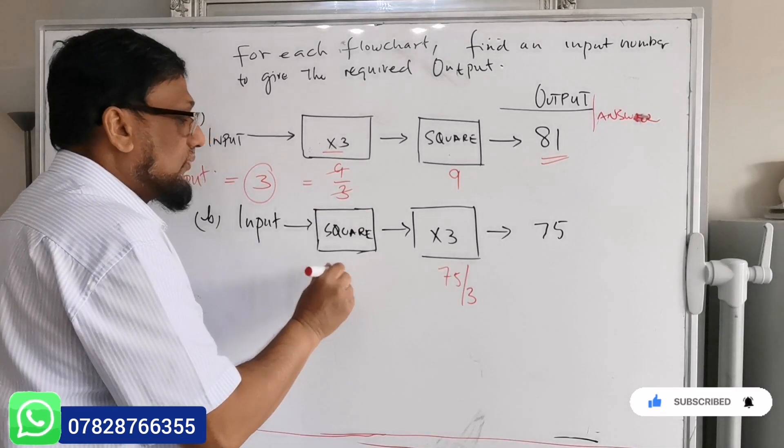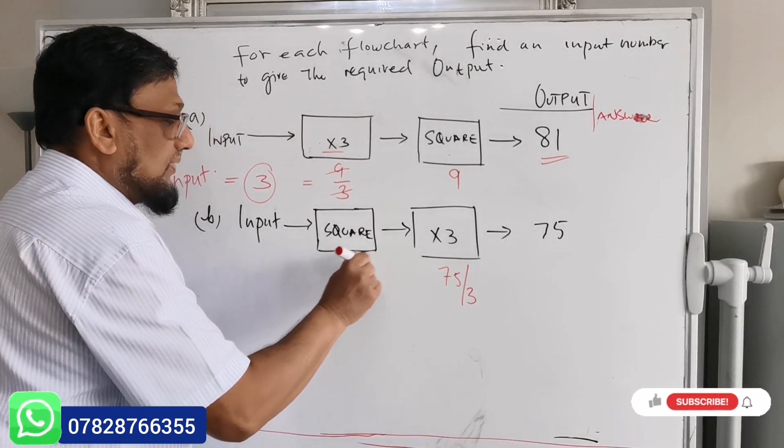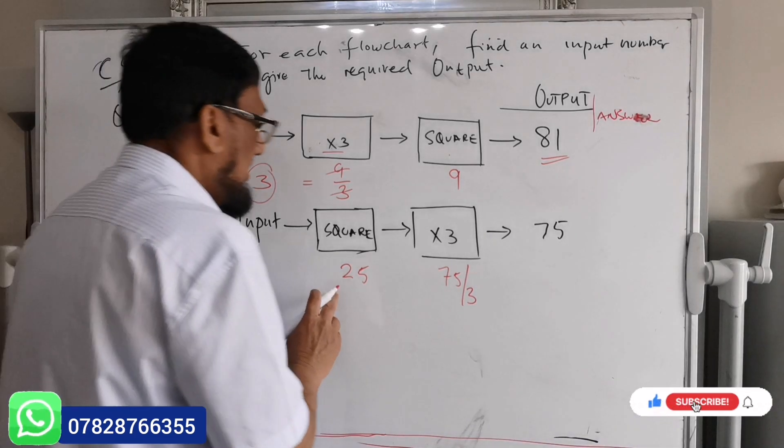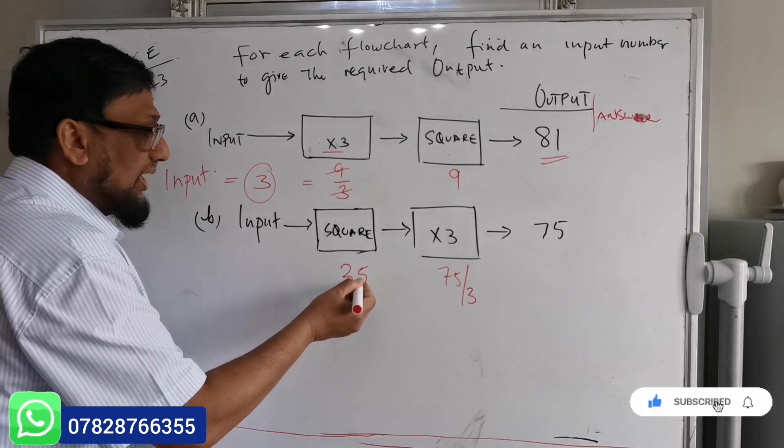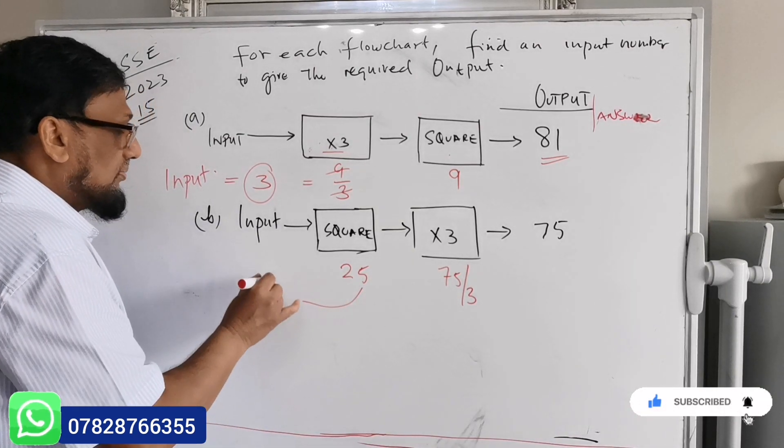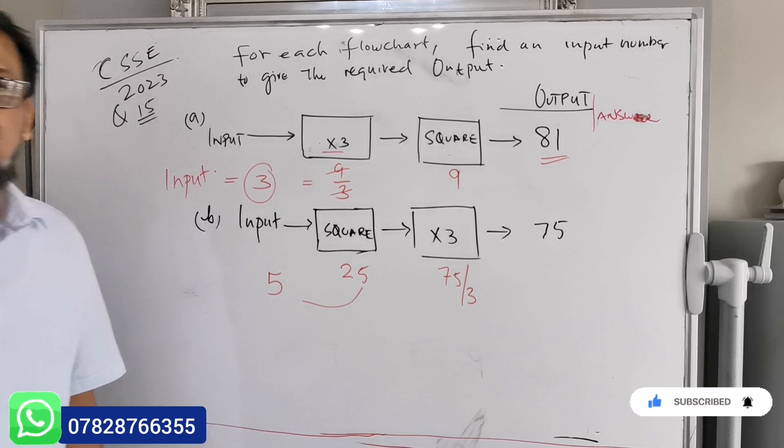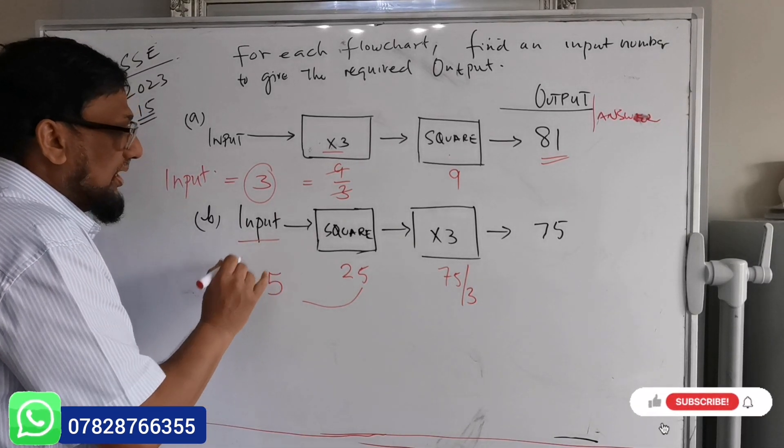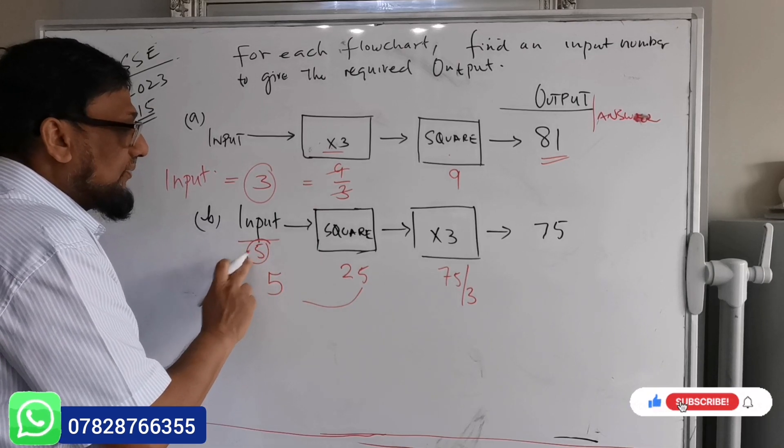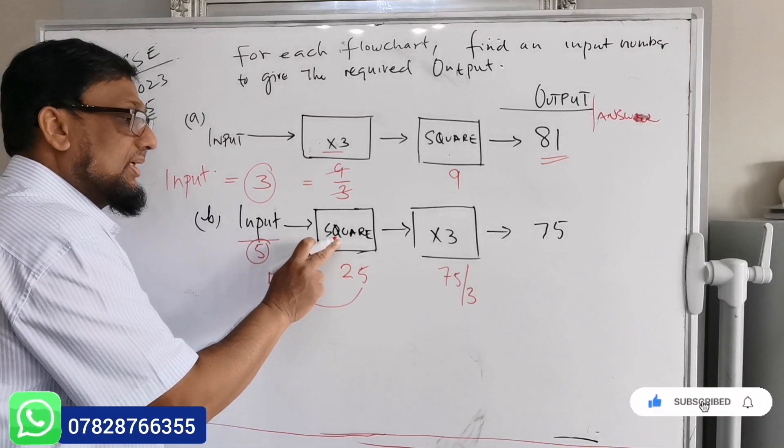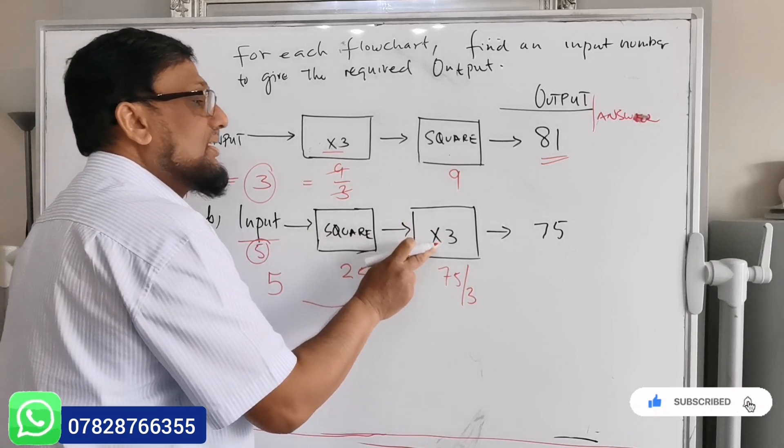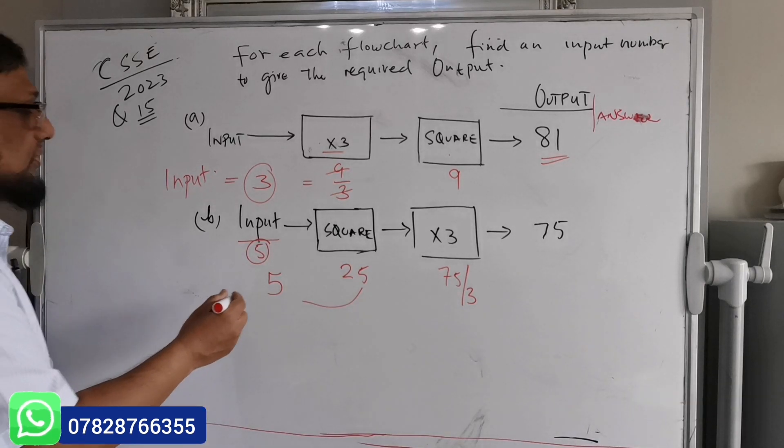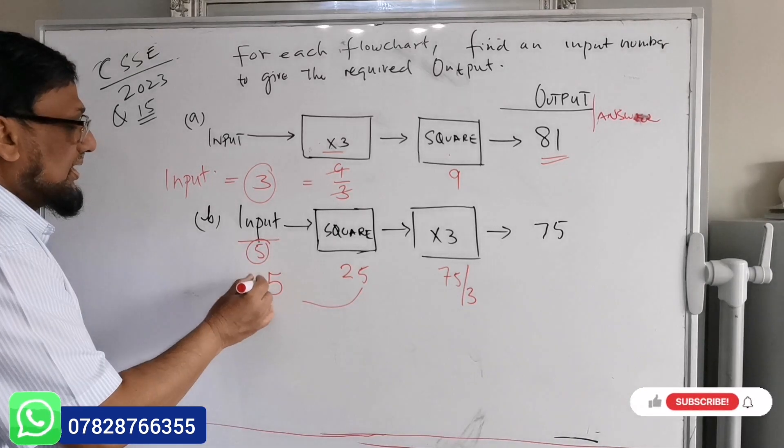75 divided by 3 equal to 25. And 25 is a square of what number? 5. So it means if I put the input here 5, 5 times 5 is 25 and 25 times 3 is 75. Very simple, very easy. So the answer will be the input is 5.